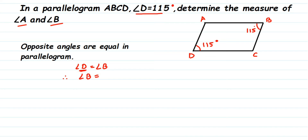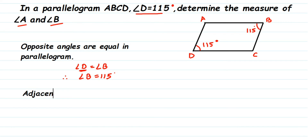Now, how to find angle A? Angle D and angle A are adjacent angles, or consecutive angles — meaning the angles that come one after the other. Here, D and A are just adjacent, one after the other. The property is that adjacent angles sum to 180 degrees in a parallelogram.